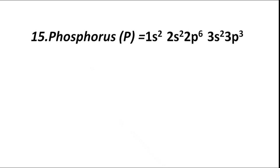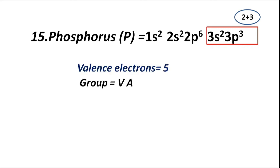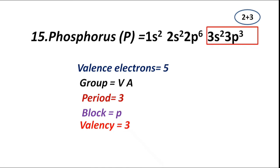Atomic number 15, phosphorus (P), has electronic configuration 1s2 2s2 2p6 3s2 3p3. The valence shell is third or M. Total valence electrons are 2 from 3s2 and 3 from 3p3; total sum is 2 plus 3, equal to 5. Hence group VA or 5A, period 3. Highest coefficient for shell is 3, hence period is third. Valence electrons fill 3p sub-shell, hence block P. Valency is 3.